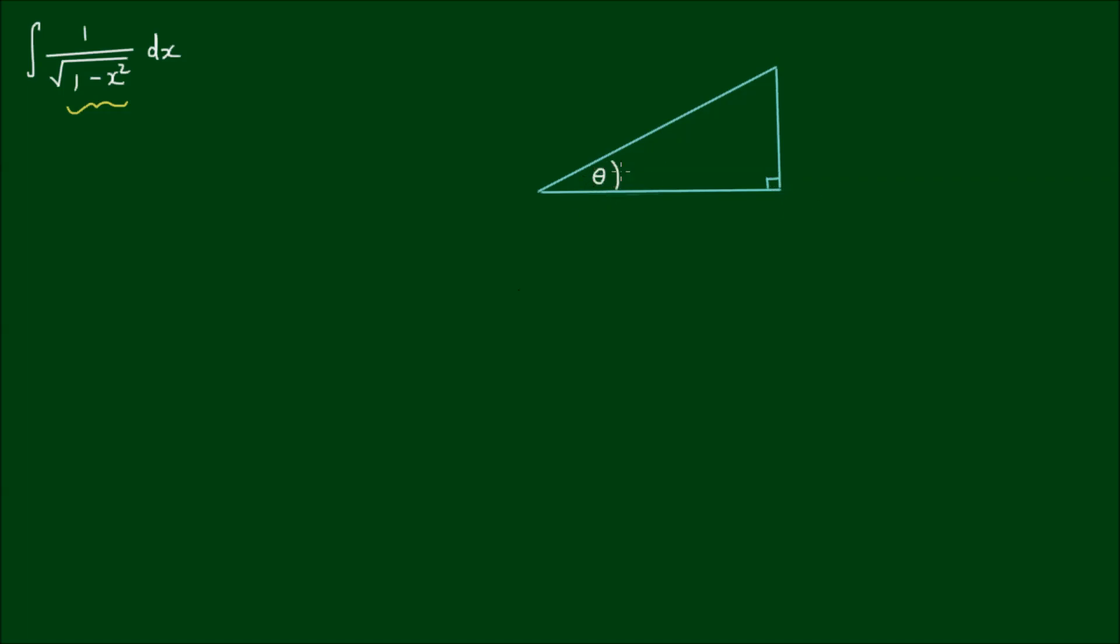So here we have the angle theta. Let's give the hypotenuse a value of 1 and label the vertical side as x, which means if we apply Pythagoras' theorem, the horizontal side, or the adjacent side, works out to be the square root of 1 minus x squared.